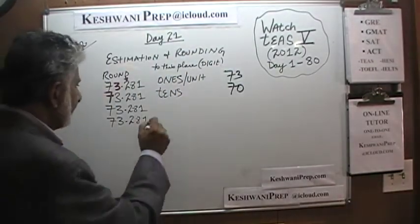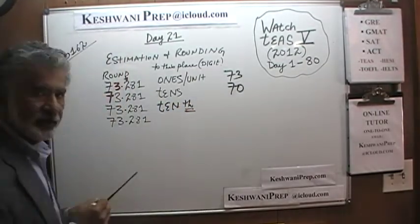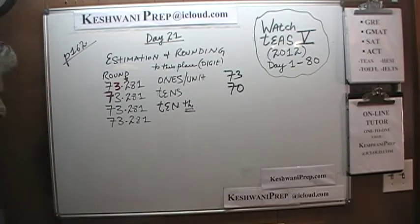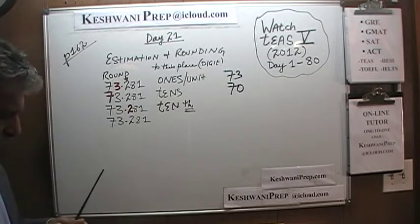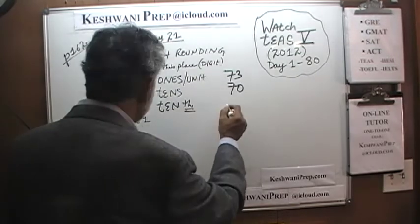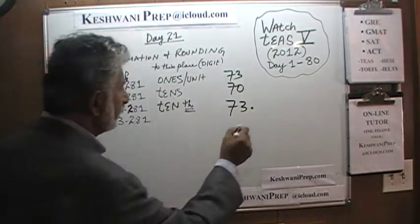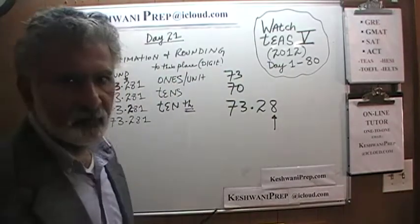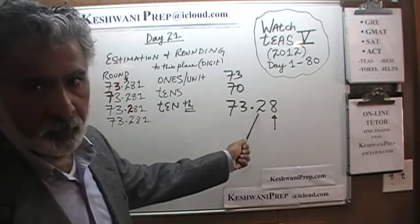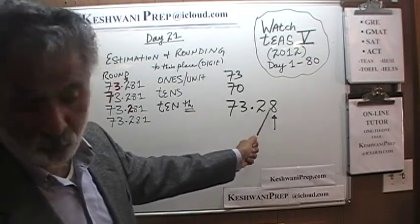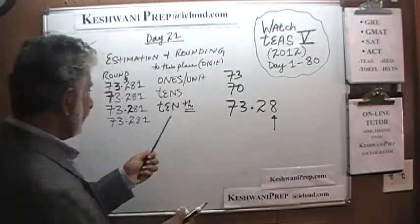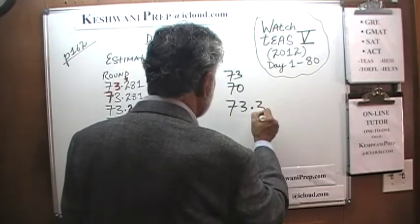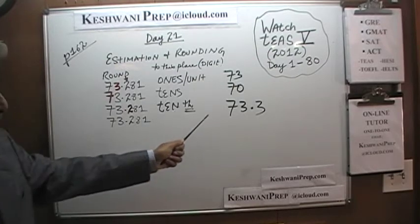Next, round it to the nearest tenth — tenths with a TH. The tenths digit in 73.281 is the 2. We go one more digit to the right and look at 8. Eight is 5 or more, so we round up. 73.281 rounded to the nearest tenth becomes 73.3.